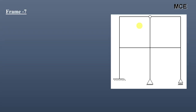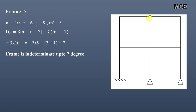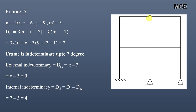For Frame 7, we can see it has 10 members, 6 reactions, 9 joints, and 1 internal hinge. The number of members meeting at this internal hinge is 3, so m′ = 3. The value of ds = 7, so this frame is indeterminate to 7 degrees. External indeterminacy = 6 − 3 = 3. Internal indeterminacy = 7 − 3 = 4.